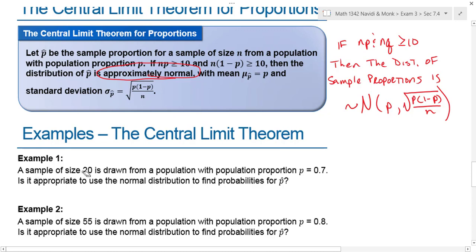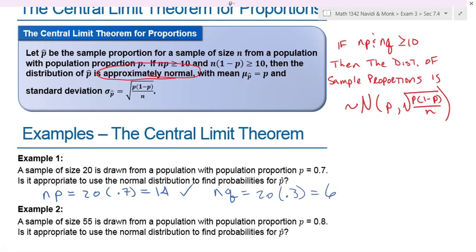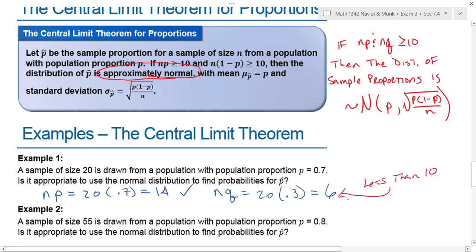In example one, a sample of size 20 is drawn from a population with a population proportion of 0.7. Is it appropriate to use the normal distribution to find probabilities for p-hat? I need to check n times p: 20 times 0.7 equals 14 — that's bigger than 10, so that's okay. I also need to check n times q: 20 times 0.3 equals 6. Because 6 is less than 10, I cannot use the central limit theorem.